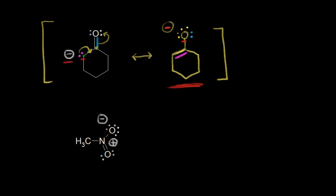The next pattern is a lone pair of electrons next to a positive charge. Let's look at nitromethane. We look at this lone pair of electrons on this oxygen, which is next to a positive charge — this nitrogen has a plus one formal charge. Our goal is to delocalize and spread charge out. We take the electrons in magenta and move them in to form a double bond between the nitrogen and the oxygen, but that would give us five bonds to nitrogen, which doesn't happen because of nitrogen's position on the periodic table.